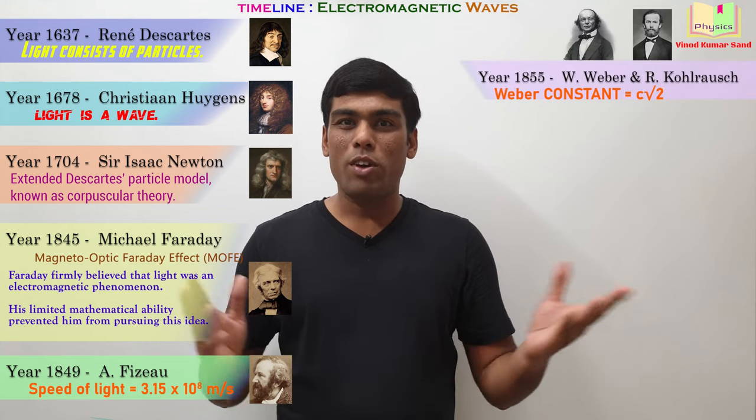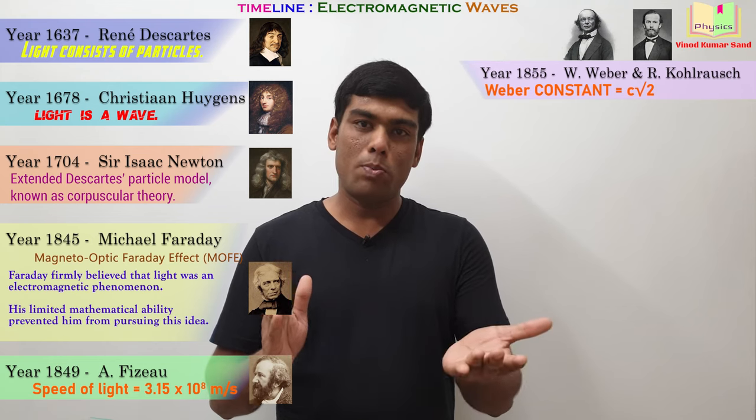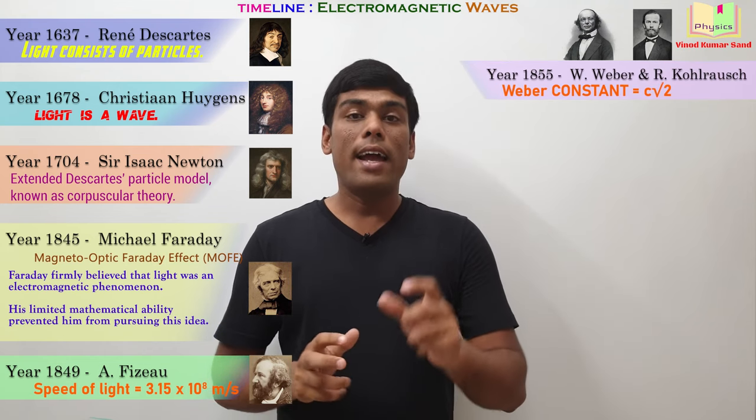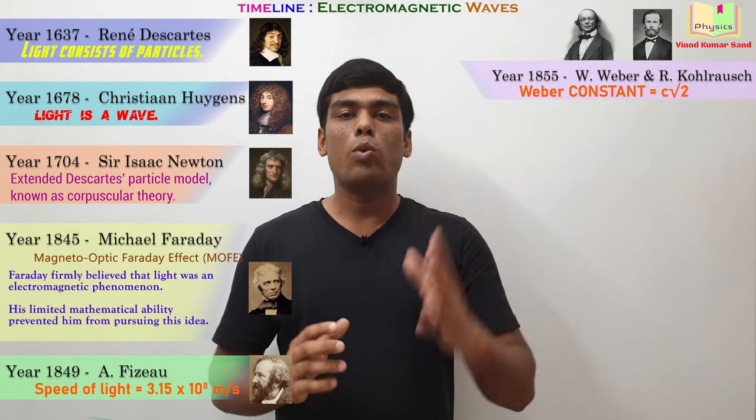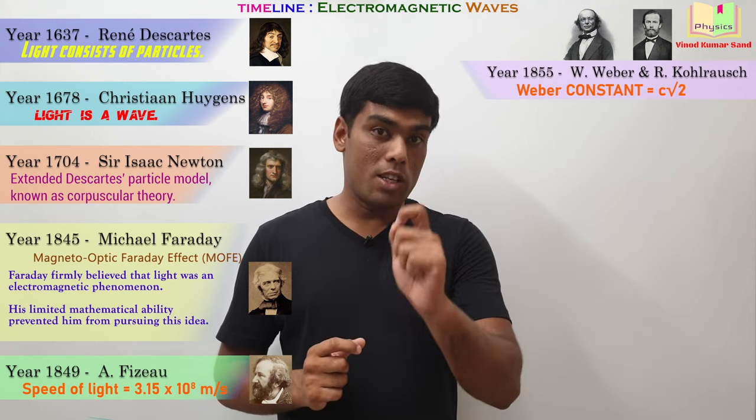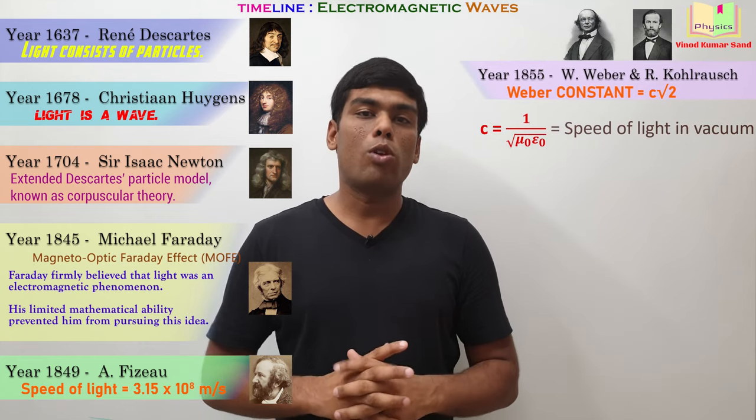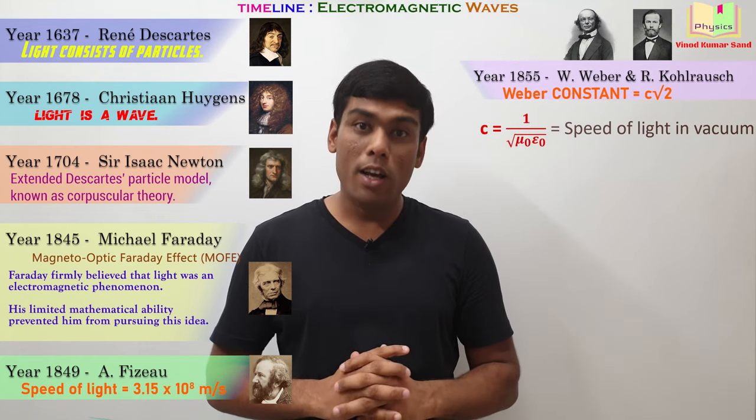Then, year 1855, Weber and Kohlrausch did few experiments with the Leiden jar and they obtained a constant which is known as the Weber constant. The Weber constant was C root 2. Here, C is the speed of light and C can be written as 1 by root of mu naught epsilon naught.